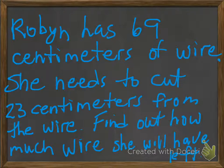Let's try another one. Robin has 69 centimeters of wire. She needs to cut 23 centimeters from the wire. Find out how much wire she will have left. So go ahead and pause the video. Try it on your own. And then come back and let's solve it. Good luck.